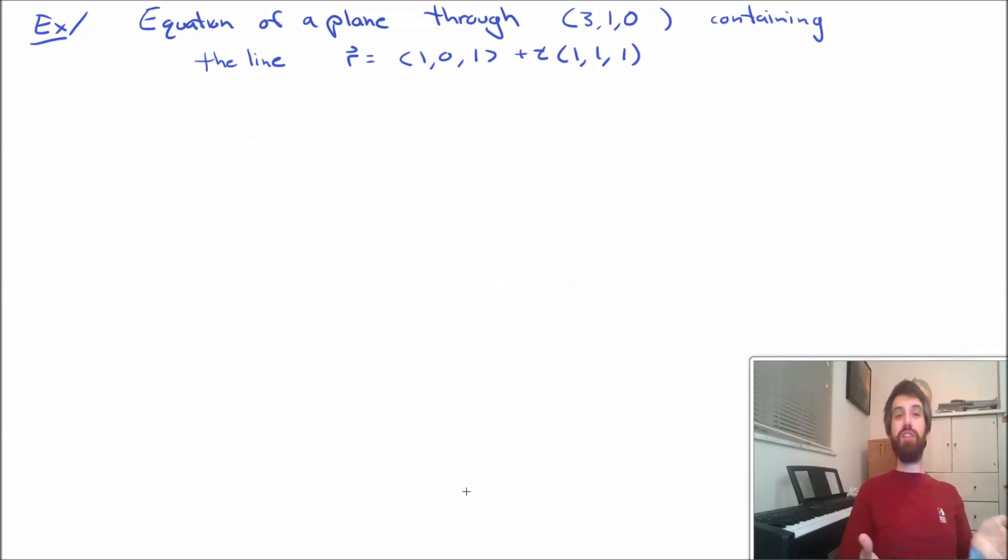In this example, we're asked to find the equation for a plane. But the plane is given in a bit of a roundabout way. It's a plane that we know goes through some specified point, this 3, 1, 0, but it's also the plane that contains some line within it. And from these two pieces of information, we want to extract out the equation of a plane.